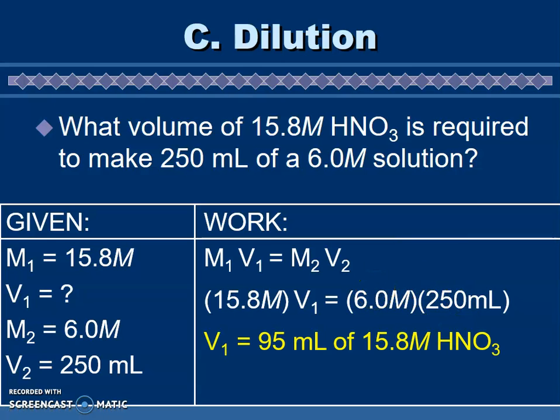And then dividing by 15.8. Your final answer when you do that is 95 milliliters. Why only two sig figs? Because our number right here only has two sig figs and this number only has two sig figs, so that's why our final answer is two sig figs.